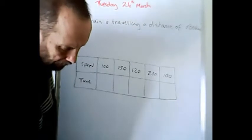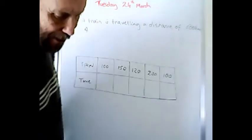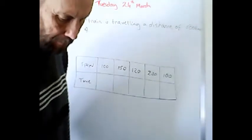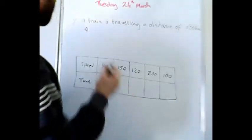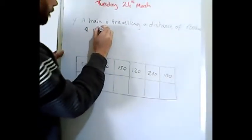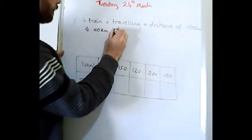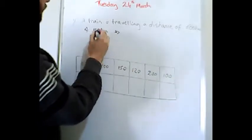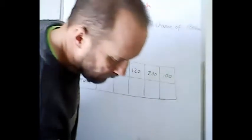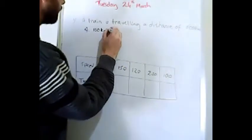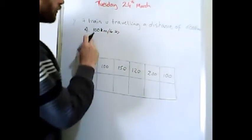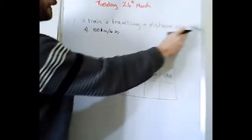It says how long does the train take if it travels at a speed of 100 kilometers per hour? Yes, it does say 100 kilometers per hour. So it travels 100 kilometers per hour, how long will it take to travel 600 kilometers?